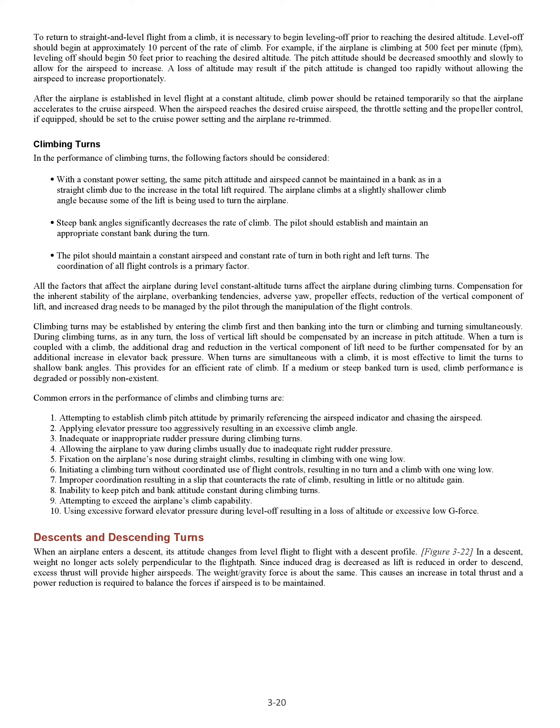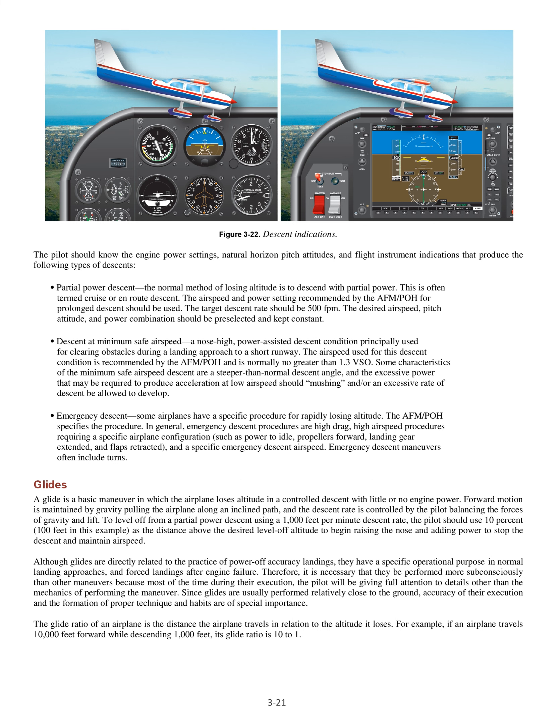Descents and descending turns. When an airplane enters a descent, its attitude changes from level flight to flight with a descent profile. In a descent, weight no longer acts solely perpendicular to the flight path. Since induced drag is decreased as lift is reduced in order to descend, excess thrust will provide higher airspeeds. A power reduction is required to balance the forces if airspeed is to be maintained. The pilot should know the engine power settings, natural horizon pitch attitudes, and flight instrument indications that produce the following types of descents.